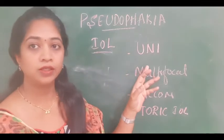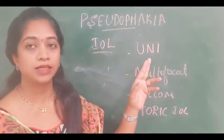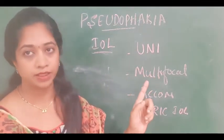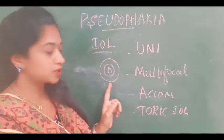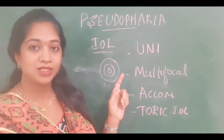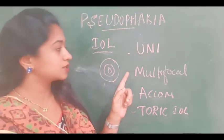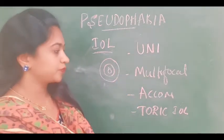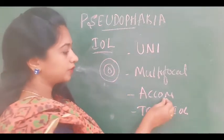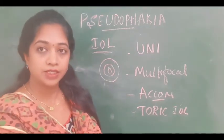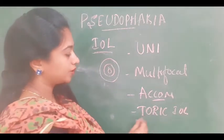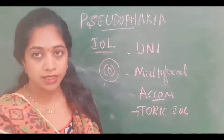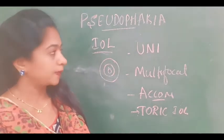In unifocal intraocular lenses, the IOL is designed to focus at one point, either for distance or for near. Multifocal lenses use the principle of diffraction — by using these multifocal lenses, one can focus for distant vision, near vision, as well as intermediate vision. In accommodative IOLs, again both distant vision and near vision are addressed. In the case of toric intraocular lenses, it is used to correct pre-existing astigmatism.